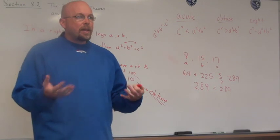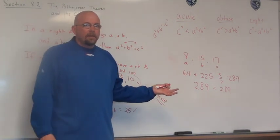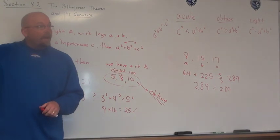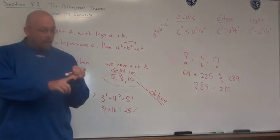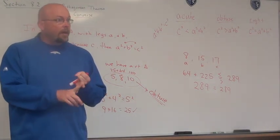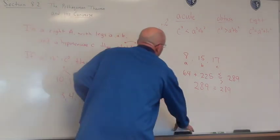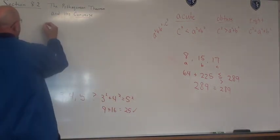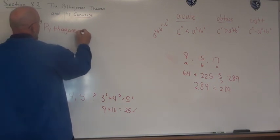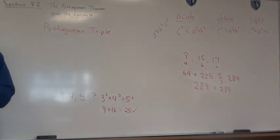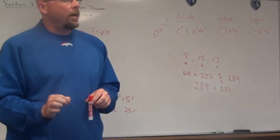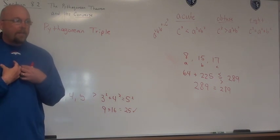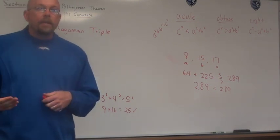How was I able to just put 8, 15, 17 on the board and know it would come out as a right triangle? That's kind of what we did in bell work today — the second problem was a 5, 12, 13 triangle. Whenever we have non-zero whole numbers for sides of a triangle and A squared plus B squared equals C squared, we call that a Pythagorean triple.